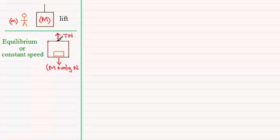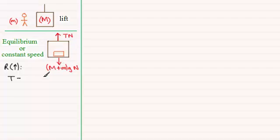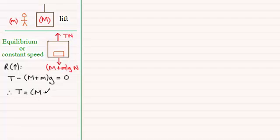We may be asked to find the tension in the cable. Resolving upwards using Newton's second law, force equals mass times acceleration, we have the upward tension T minus the combined weight of the lift and the person, which is minus (big M plus little m) times g. Since it's in equilibrium or moving at constant speed there's no acceleration, so this equals zero. Rearranging for T gives T equals (M plus m) times g.